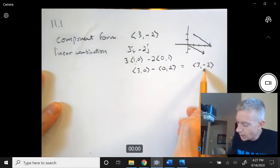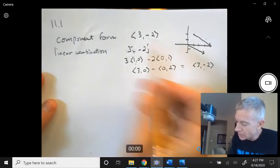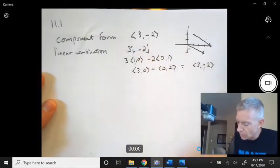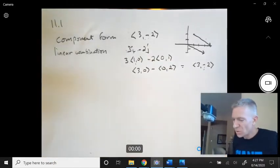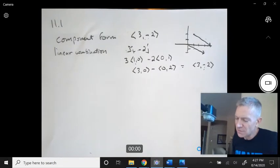I prefer component form, so I will typically use this, but you do have to know both. Now that brings us, oh, there's also on page 755 there are some properties of vector operations that are pretty straightforward.